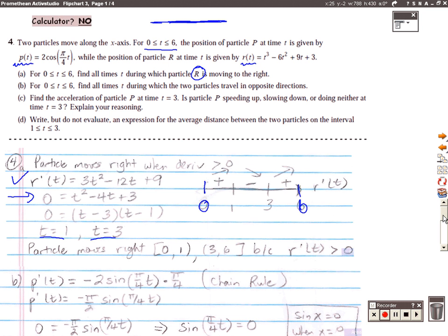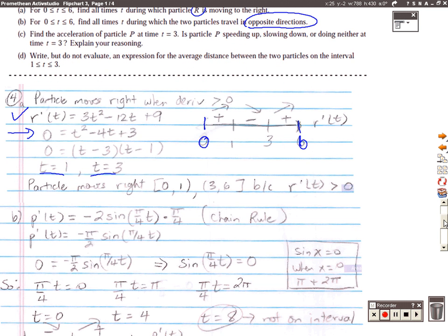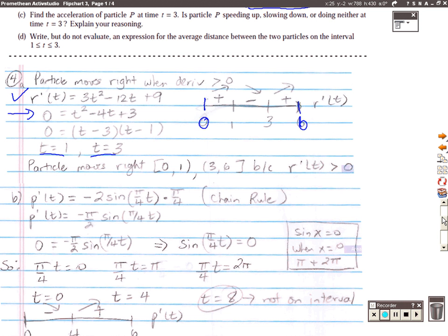Part B: we're finding all the times at which the two particles travel in opposite directions. We're still talking about direction. So to find direction, we're going to use velocity again. Now we've already found the velocity of particle R. So now I need to do the same thing for the P function.